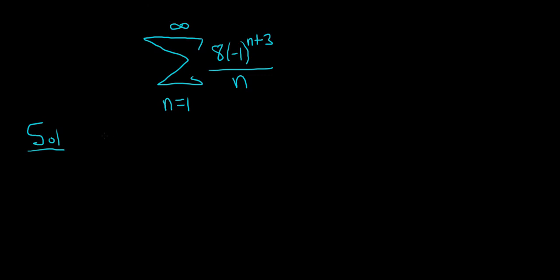So when you're using the alternating series test, you start by identifying your a sub n. a sub n is always the part that is not alternating. So in this case, that would just be 8 over n.